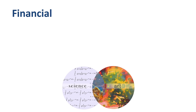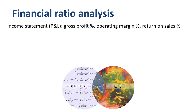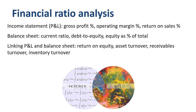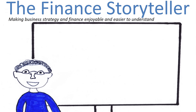In this video on financial ratio analysis, we covered 10 financial ratios. On the income statement: gross profit percentage, operating margin percentage, and return on sales percentage. On the balance sheet: current ratio, debt to equity, and equity as percentage of total. When linking the P&L and the balance sheet: return on equity, asset turnover, receivables turnover, and inventory turnover. Financial ratio analysis is as much an art as it is a science. If you want to learn more about business, finance, and accounting, subscribe to the Finance Storyteller YouTube channel. Thank you!